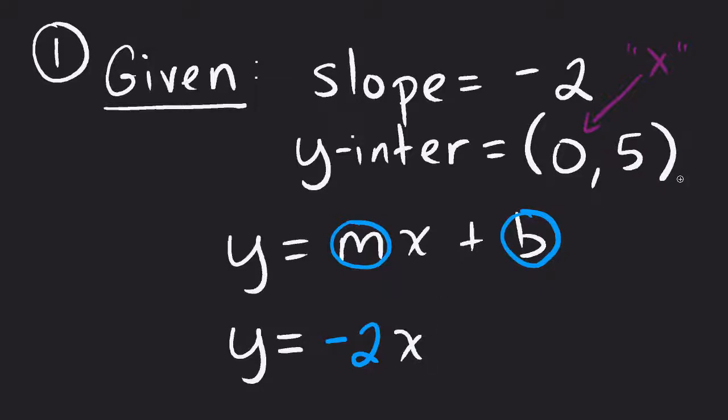And what's our b value? Our b value is the value they gave us here, so that would be 5. So our equation is y equals negative 2x plus 5, and we now have our solution.